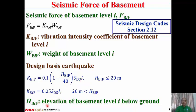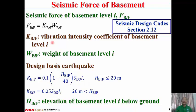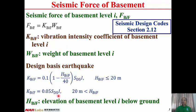HBIF is the elevation of basement level i below the ground. SDS is the design spectral acceleration for short period structures. I is the importance factor of the structure. The higher the depth of the basement level, the lower the coefficient, and the lower the seismic force. There is a lower bound: when HBIF is larger than 20 meters, KBIF is limited to a lower bound of 0.05 times SDS times I.